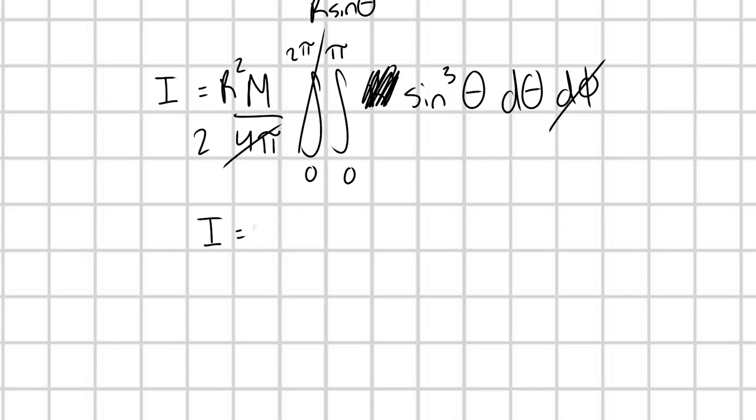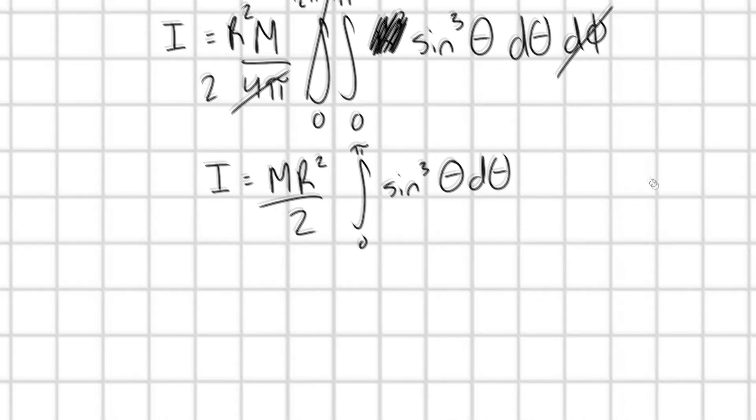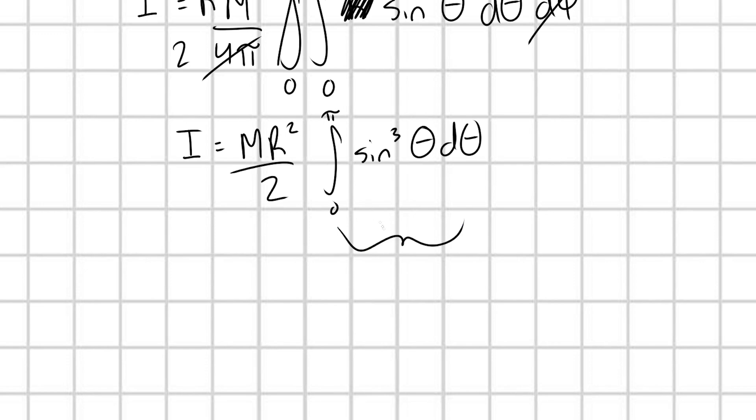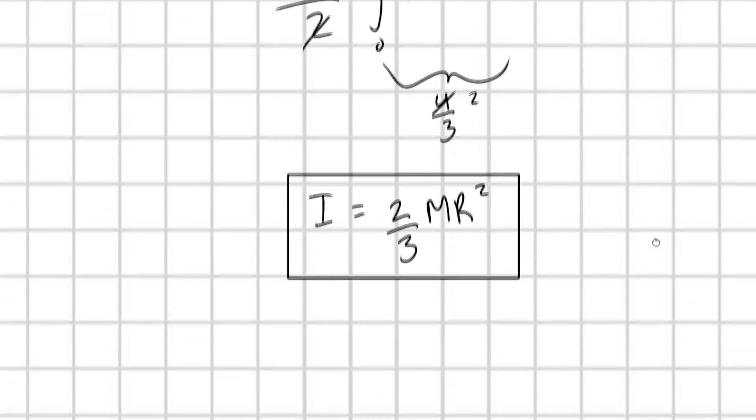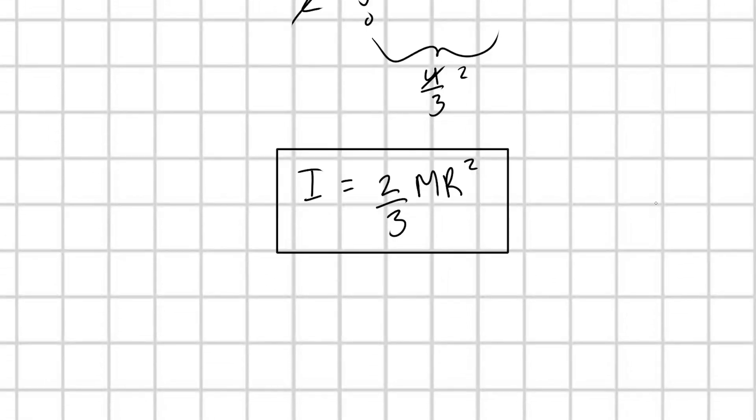And so I is equal to M R squared over two integral from zero to pi of sine cubed theta d theta. And oh my goodness, this is the exact same integral we got to in last week's video, and it had a value of four thirds. And so this four and two are going to cancel, and we're going to be left with I of our spherical shell is equal to two thirds M R squared. And bam, there we go. Awesome. And now we feel confident we're seeing here that using the definition of moment of inertia, using this perspective, we get the exact same result as we did with the ring stacking method. And so yay, we're happy about that.